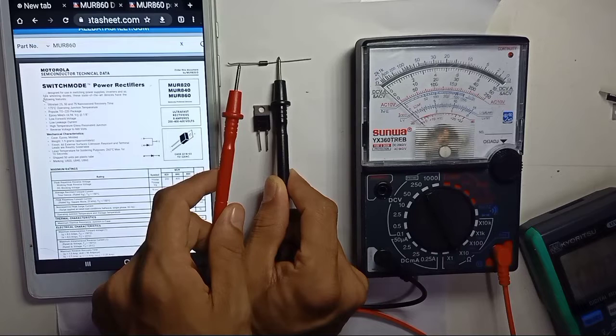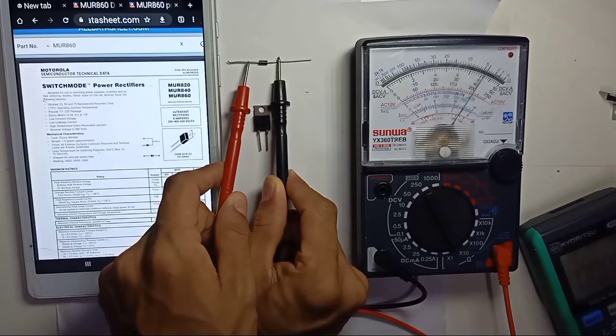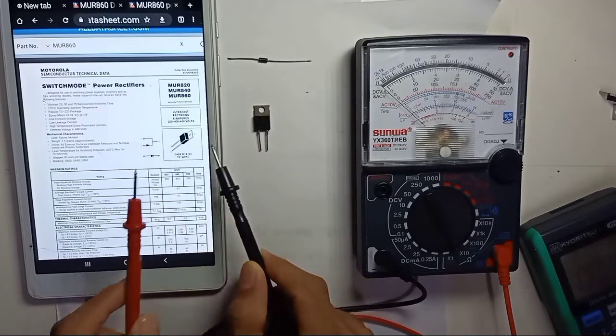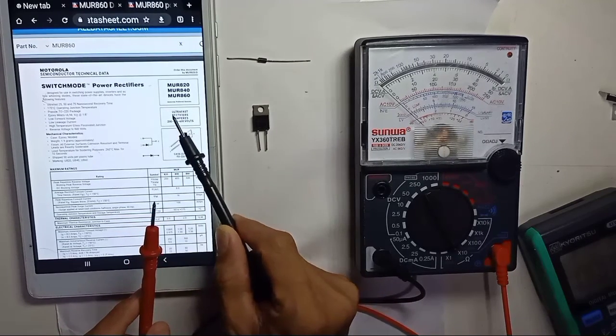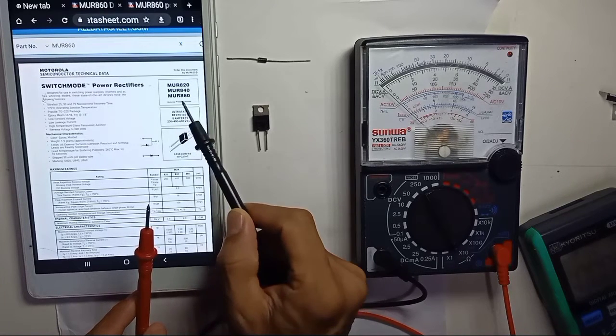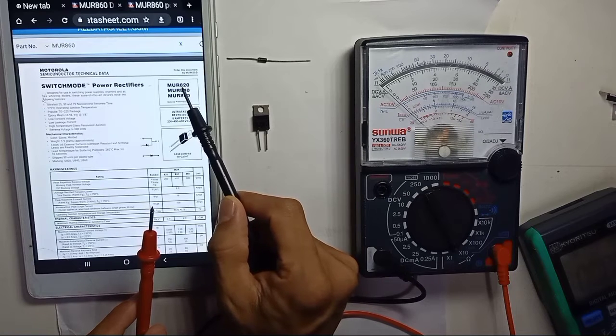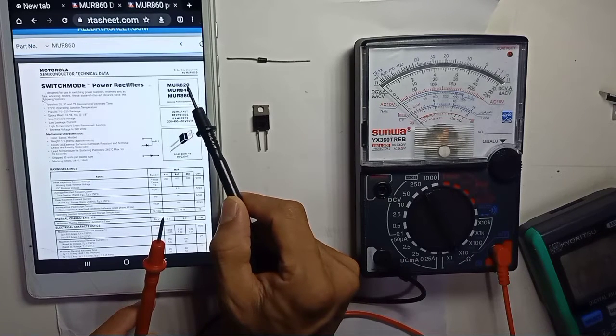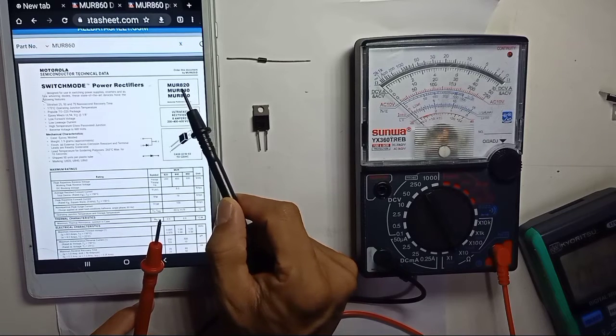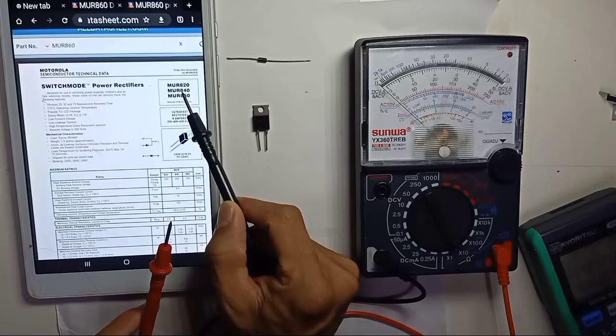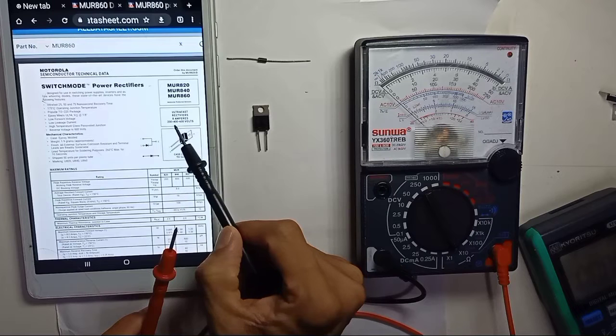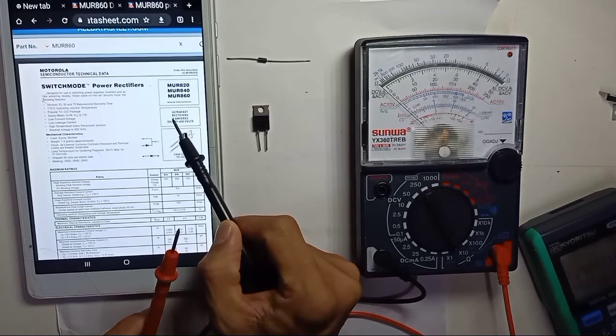This MUR is an ultra-fast rectifier. This can hold 8 amperes. If your part number is 820, you have 8 amperes and the 20 behind means 200 volts. If your part is 840, that means 8 amperes, 400 volts. MUR860 is 8 amperes, 600 volts.